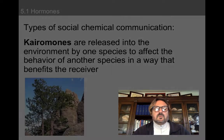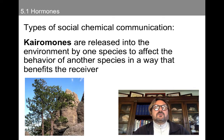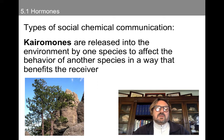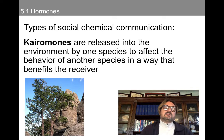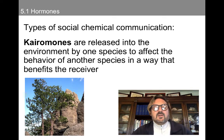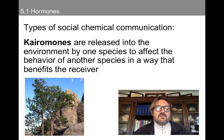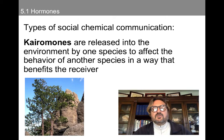It's very similar to what we're going to call kairomones. Kairomones are released into the environment by one species to affect the behavior of another species in a way that benefits the receiver. For instance, we have certain types of trees that if they're being attacked by predatory beetles, they will actually release scents — kairomones — into the environment that attract other predators. These will actually benefit those additional predators, sometimes to the exclusion of the initial predators.